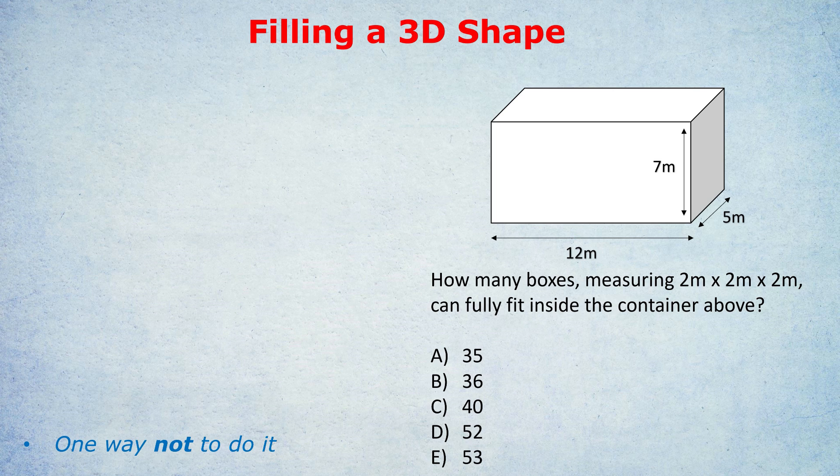What at least half of my students would do is multiply 12 by 7 by 5. And what is that? I think that's 420. And then divide by 2x2x2, which is 8, so 420 divided by 8. That's the volume of the container divided by the volume of the box. That actually gives you, I think, 52.5. And so the students would pick D, that we can fit 52 boxes.